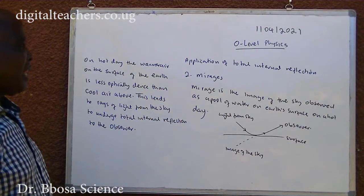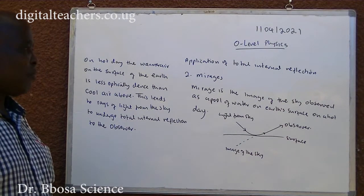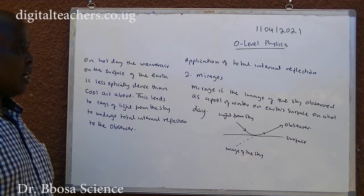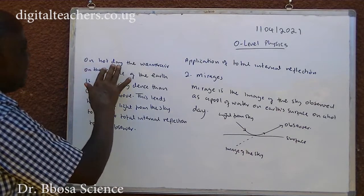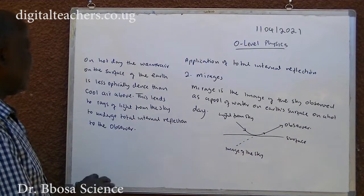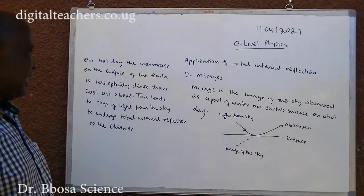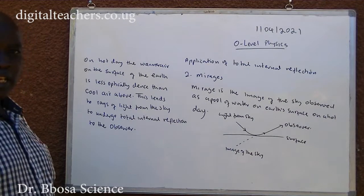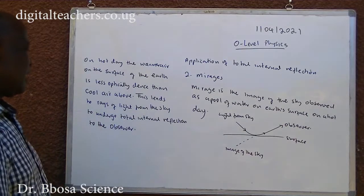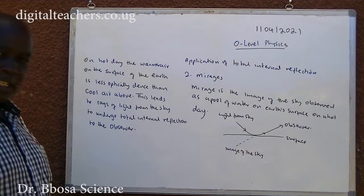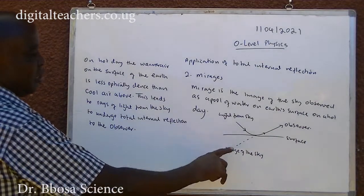Application 2 — Mirages: A mirage is an image of the sky observed as a pool of water on the earth's surface on a hot day. On a hot day, the warmer air on the surface of the earth is less optically dense than the cool air above. This leads to rays of light from the sky undergoing total internal reflection to the observer.